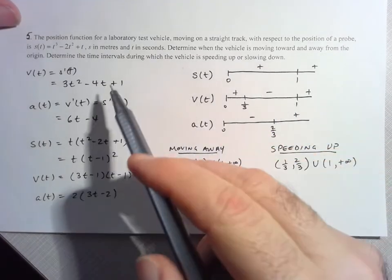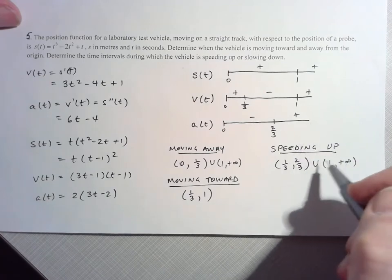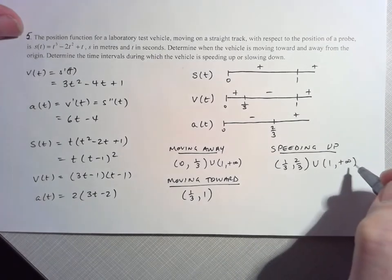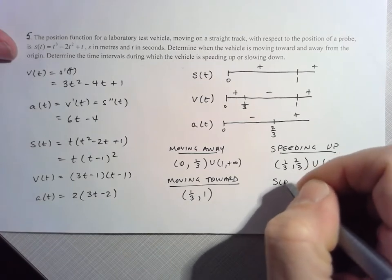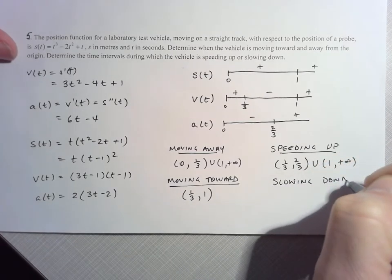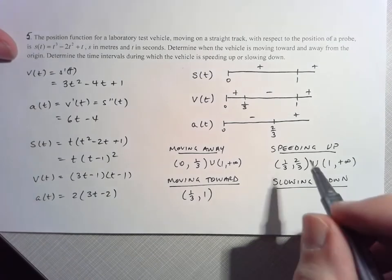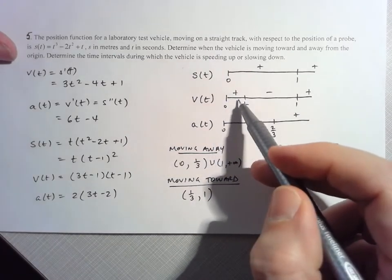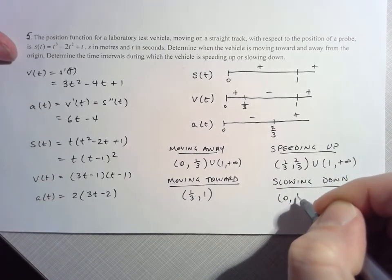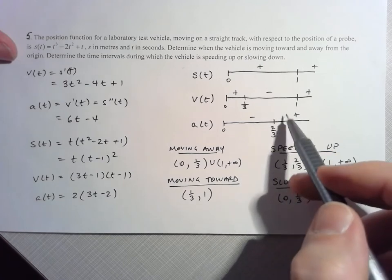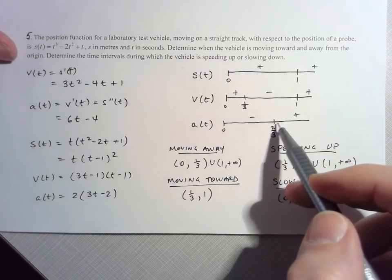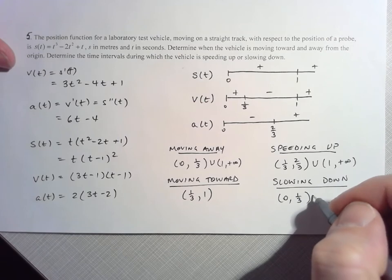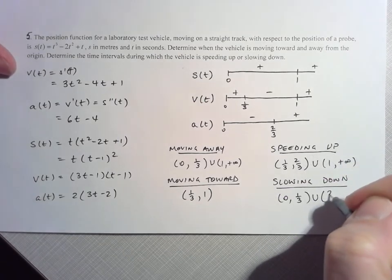Since they haven't given us an end time, we write to positive infinity, which really means whenever this experiment ends. For slowing down, we need the velocity and acceleration to have different signs. From 0 to 1/3, they have different signs — positive and negative. And from 2/3 to 1, the acceleration is positive and the velocity is negative. So slowing down occurs on (0, 1/3) ∪ (2/3, 1).